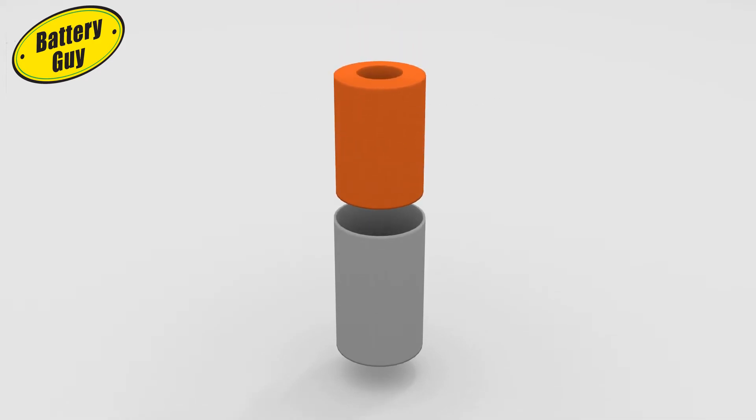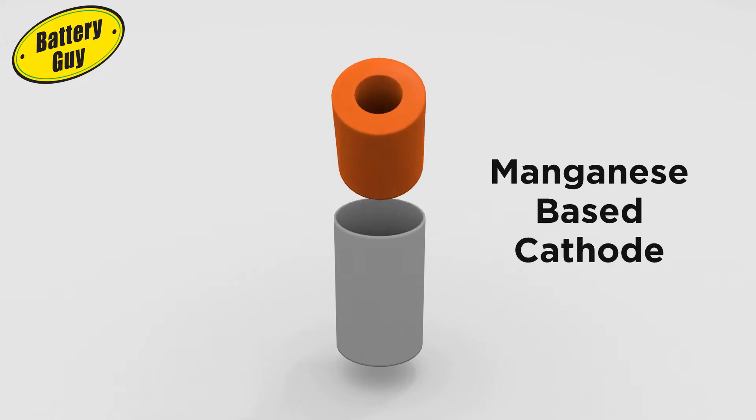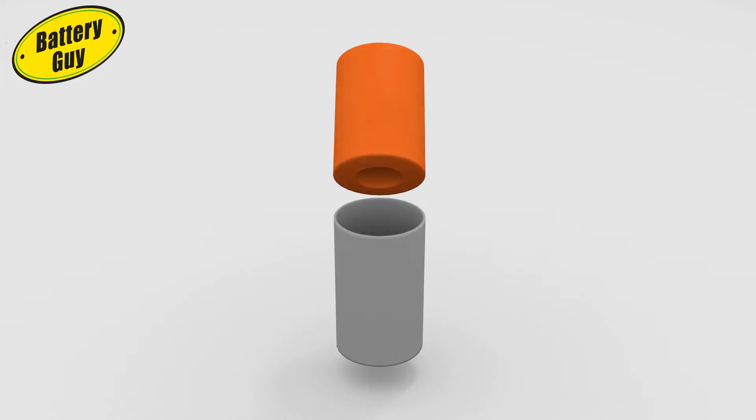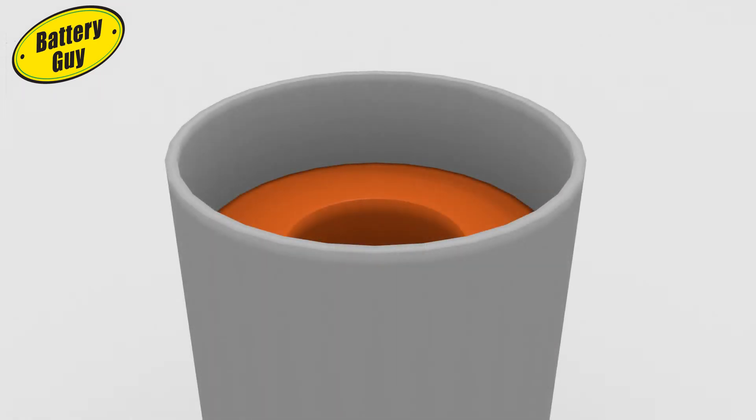The cathode is a manganese-based hollow cylinder, which is inserted into the case. The case is then indented to hold the cathode in place.